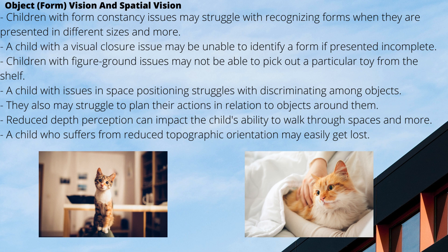A child with visual closure issues may be unable to identify a form if it is presented incompletely. Children with figure-ground issues may not be able to pick out a particular toy from a shelf, causing struggles with sorting and organizing personal items. A child with issues in spatial positioning struggles with discriminating among objects based on their placement in space, may struggle to plan actions in relation to surrounding objects, and may show delayed gross motor skills. Reduced depth perception can impact the child's ability to walk through space.